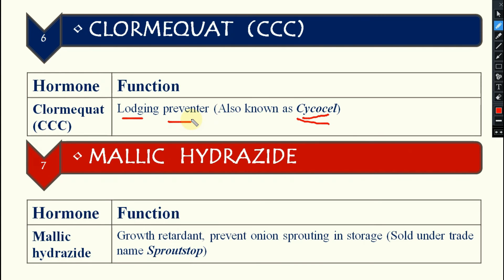The next hormone is maleic hydrazide, also known by the trade name 'Sprout Stop.' It acts as a growth retardant and stops sprouting. Its main use is to prevent onion sprouting in storage. If onions sprout, their market value is reduced, so under storage conditions, maleic hydrazide is applied so that sprouting of onions will not be induced.